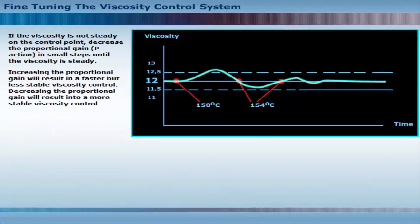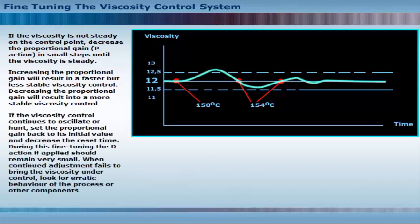If the viscosity is not steady on the control point, decrease the proportional gain in small steps until the viscosity is steady. Increasing the proportional gain will result in a faster but less stable viscosity control. Decreasing the proportional gain will result in a more stable viscosity control. If the viscosity control continues to oscillate or hunt, set the proportional gain back to its initial value and decrease the reset time.